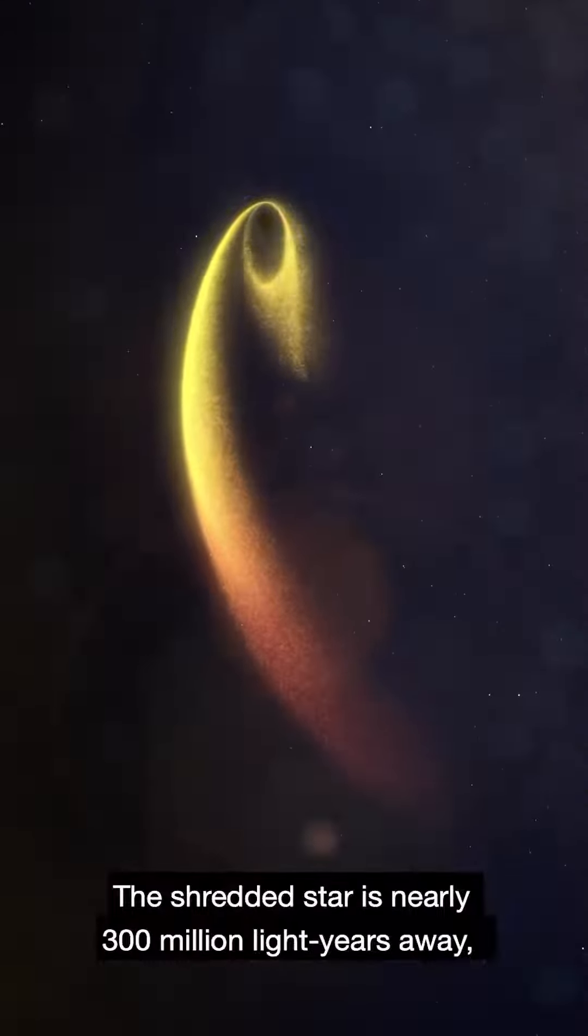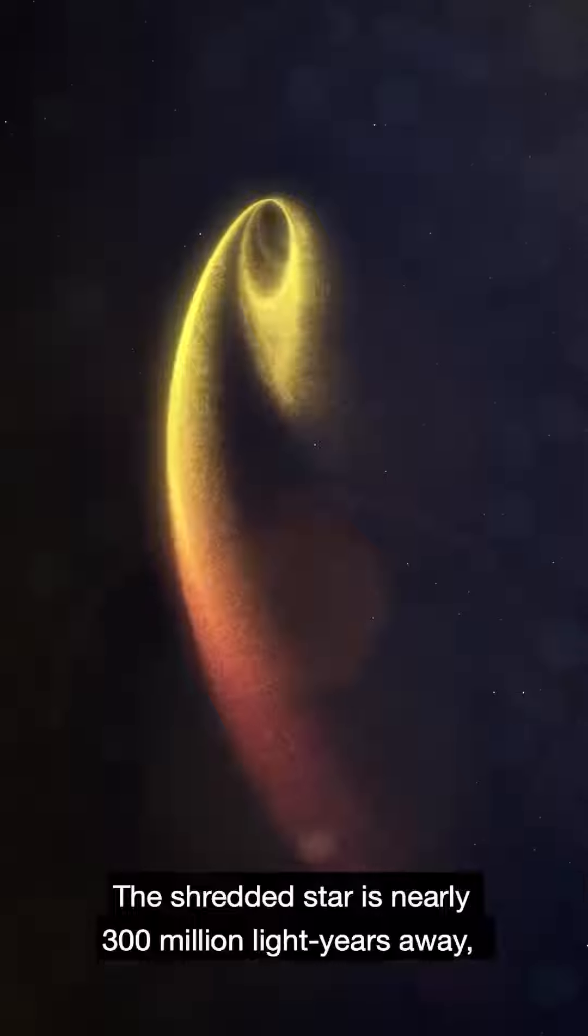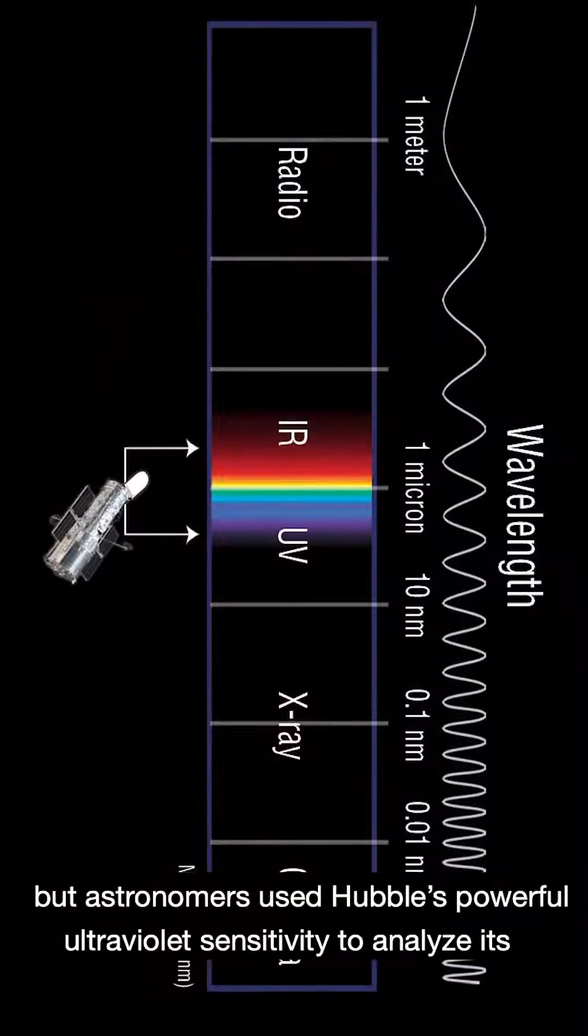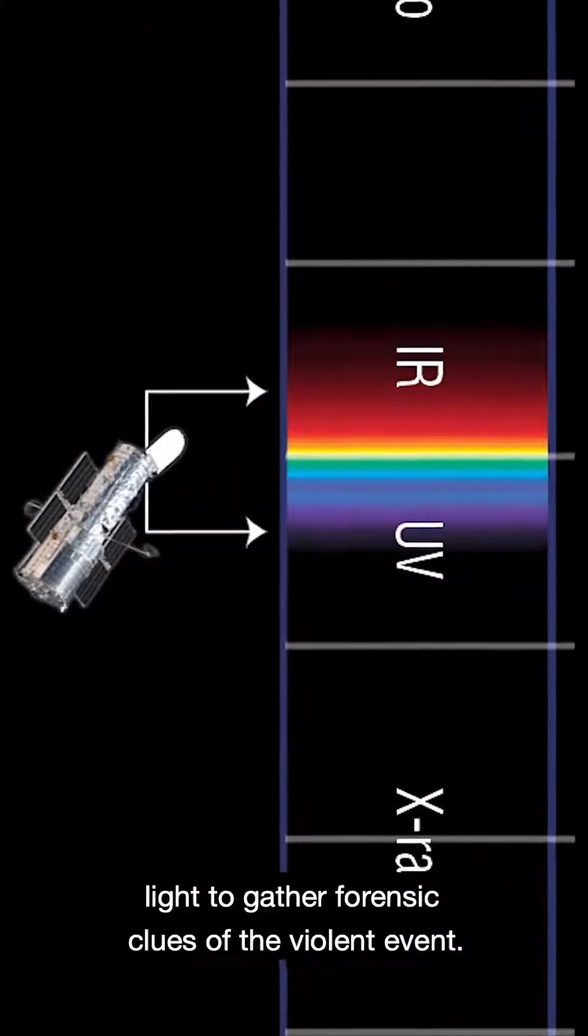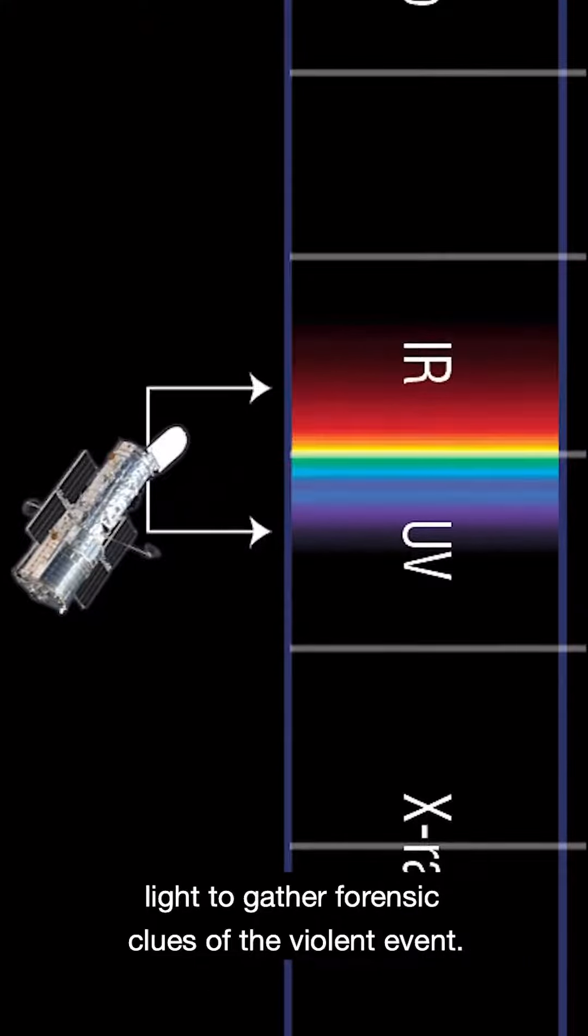The shredded star is nearly 300 million light-years away, but astronomers used Hubble's powerful ultraviolet sensitivity to analyze its light to gather forensic clues of the violent event.